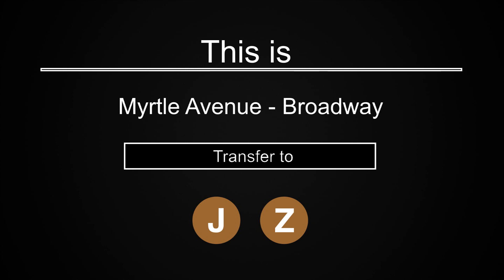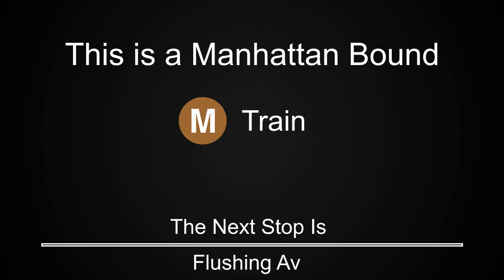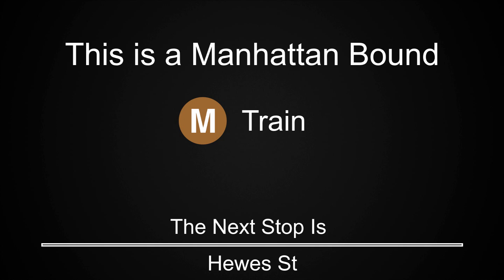This is Myrtle Avenue, Broadway. Transfer is available to the J and Z trains. This is a Manhattan-bound M train. The next stop is Lorimer Street. This is a Manhattan-bound M train. The next stop is Hughes Street. This is a Manhattan-bound M train. The next stop is Marcy Avenue.